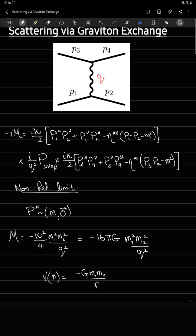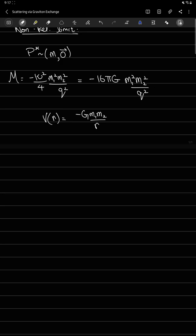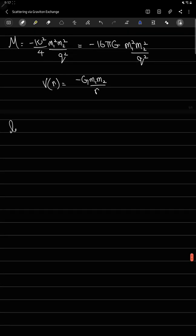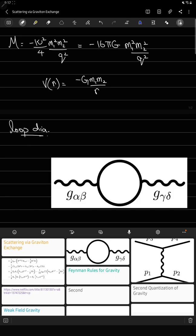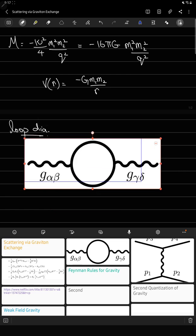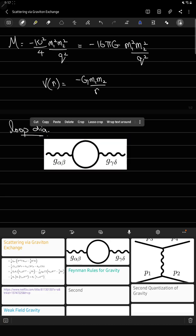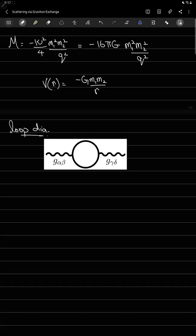With this and the previous lectures, we can say that we have completed the construction of general relativity as a quantum field theory at tree level. Now from here you may ask, what about loop diagrams? Of course I'll not leave you hanging. I'm going to give you an example. For illustration, I'm going to consider the one loop matter correction to the graviton propagator, which is given by this diagram.